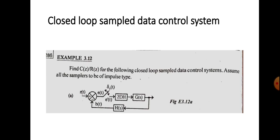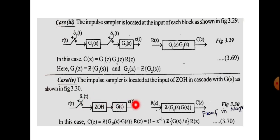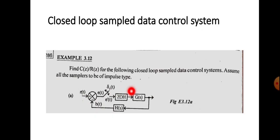These cases all concern the open loop sampled data control system. Next we come to the closed loop sampled data control system, which has a feedback path. Let us do a problem for analyzing such a closed loop system. The example is: find C(z)/R(z) for the following closed loop sampled data system, assuming all samplers to be of impulse type.